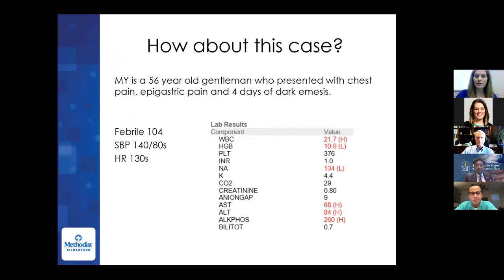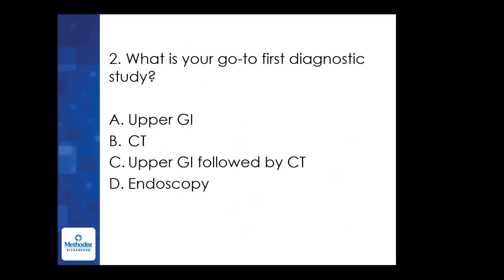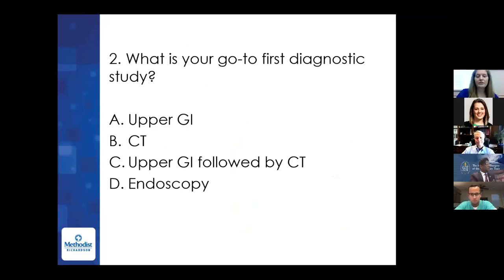Let's look at a case. Our patient is a 56-year-old who presented to the emergency room with chest pain and epigastric pain of about four days' duration. He had really dark emesis, was febrile, tachycardic, with a white count of 21, and mild elevations of ALT, AST, and ALP. If you had this patient, what would be your first diagnostic study? Theoretically, if you were seeing this patient, what would be your first go-to?